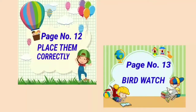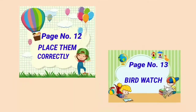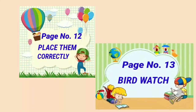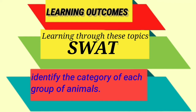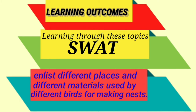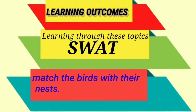Page number 12 is about animals falling under different categories, and page number 13, Bird Watch, is about different types of nests made by different birds. Learning outcomes: students will be able to recall the names of different categories of animals, identify the category of each group of animals, enlist different places and materials used by different birds for making nests, and match birds with their nests.